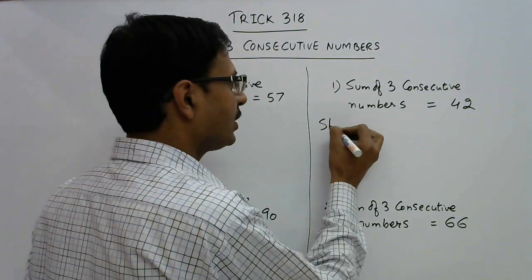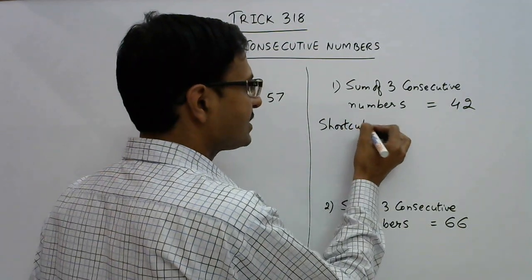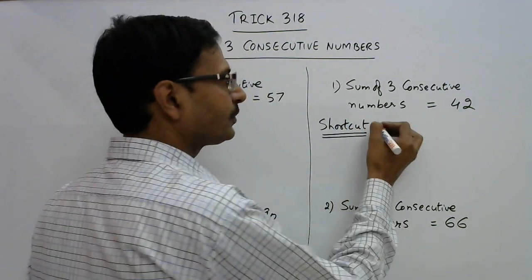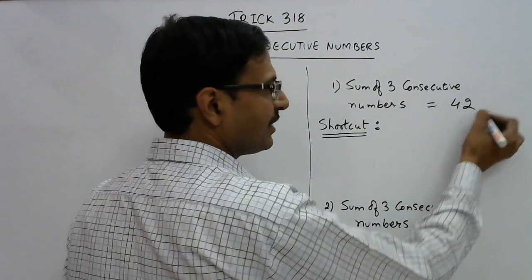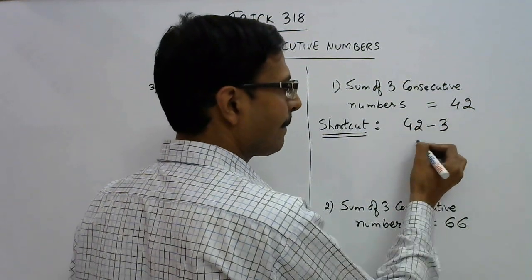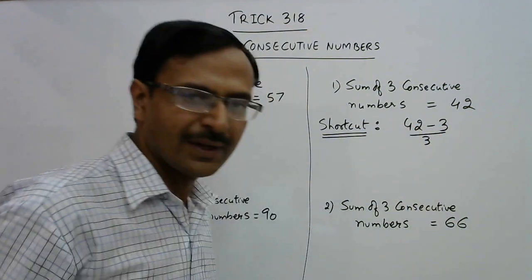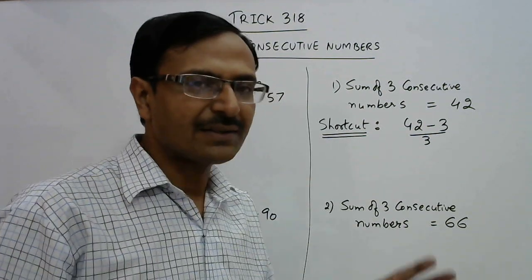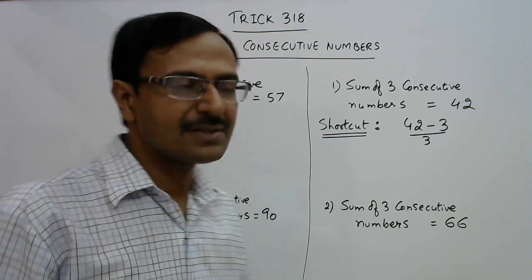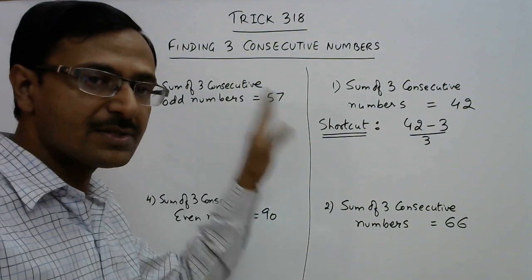But through this shortcut you can find the answer directly. Whatever sum is given, just subtract 3 and divide it by 3. Yes, just subtract 3 and divide by 3. Remember, this is the shortcut for finding three consecutive numbers.